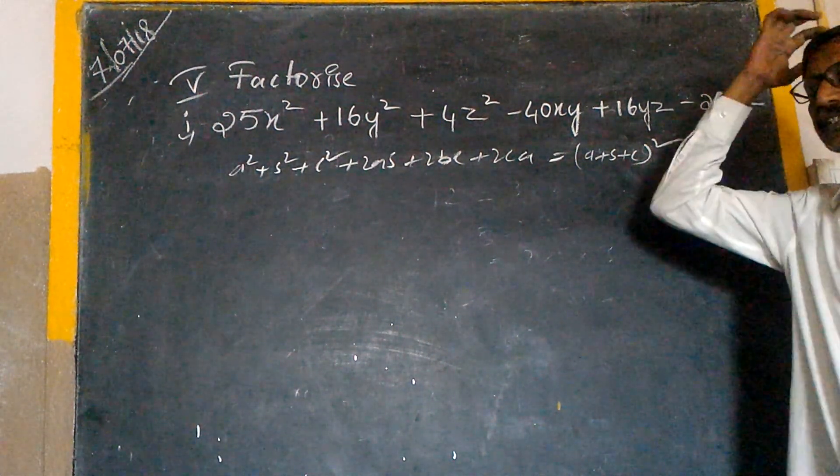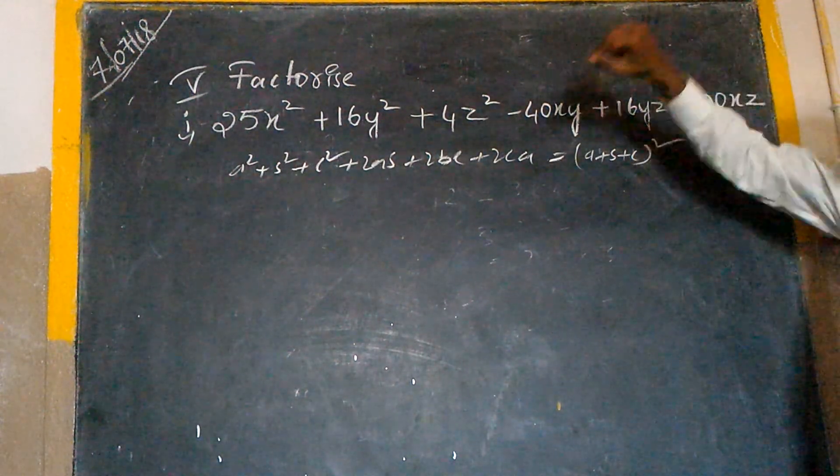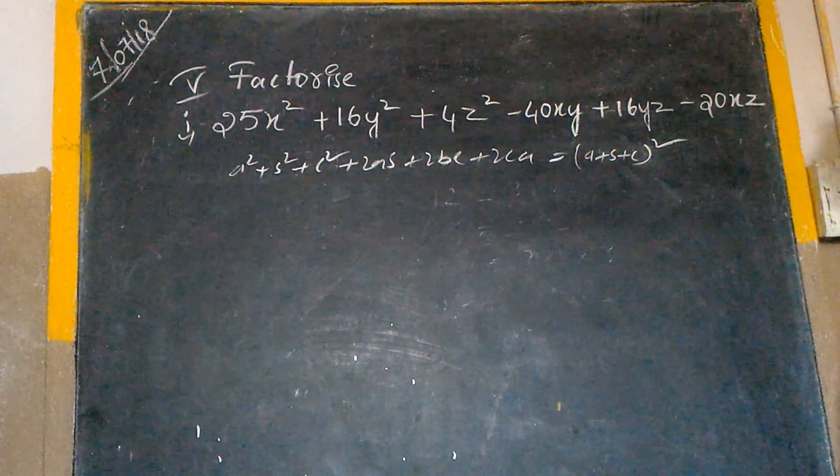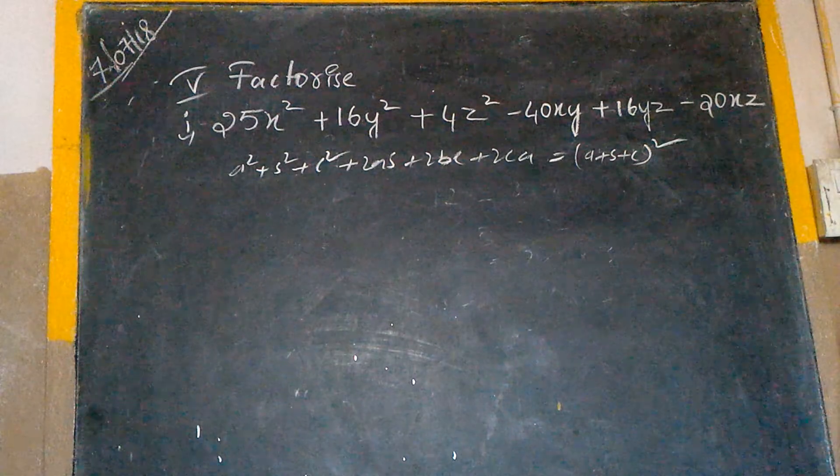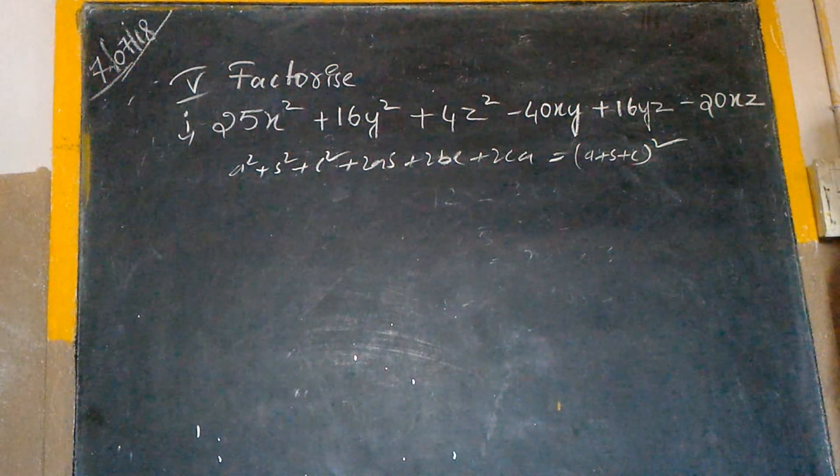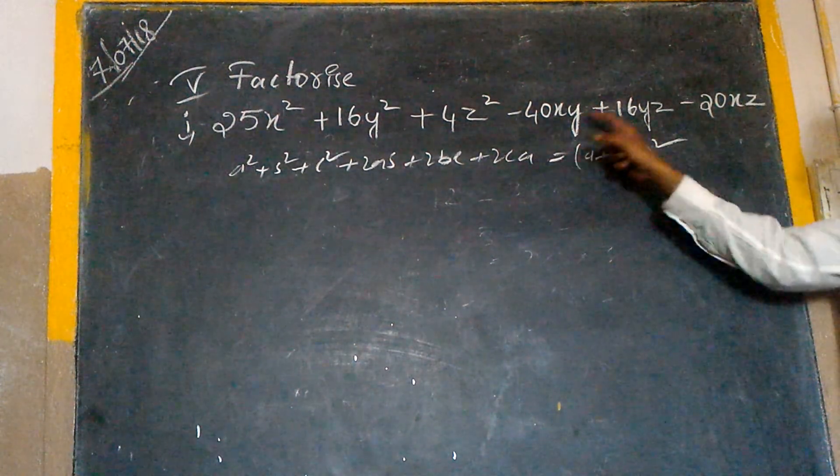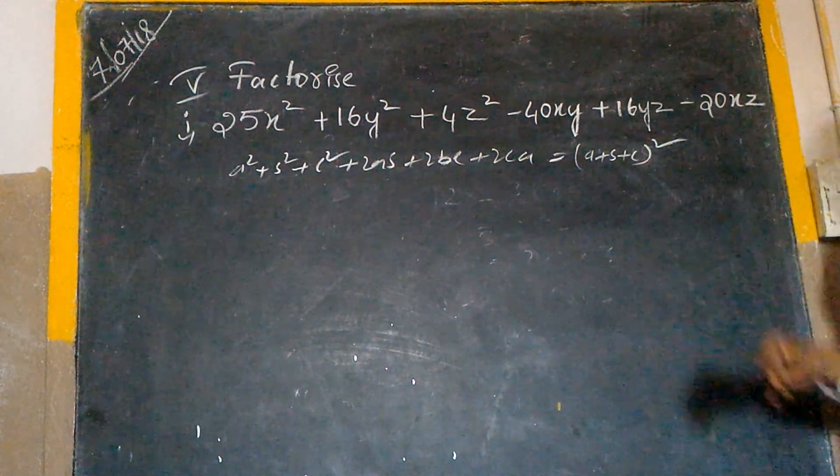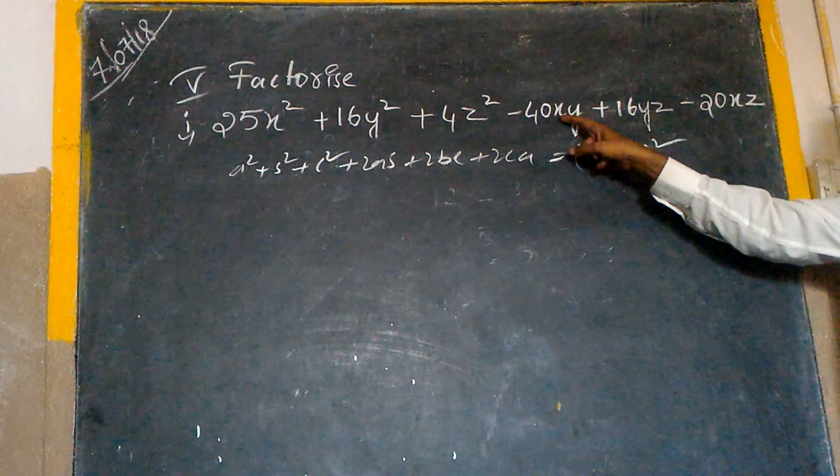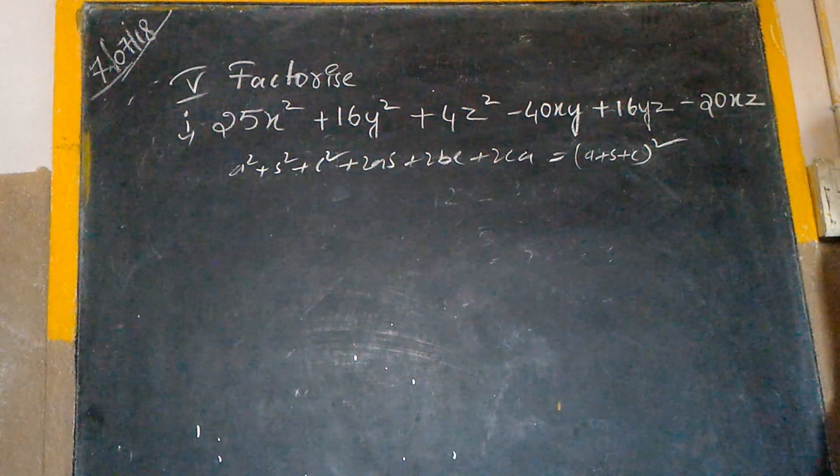25x square plus 16y square plus 4z square minus 40xy plus 16yz minus 20zx. First we have to identify negative terms. These two are negative terms. Here x and x is a common variable.